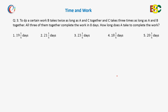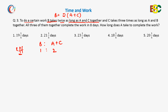The question states that to do a certain work, B takes twice as long as A and C together. So B is taking twice the time that A and C together take, meaning the ratio of efficiency of B to A plus C becomes 1 is to 2, because efficiency is the reciprocal of time.